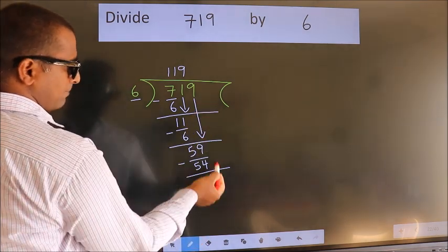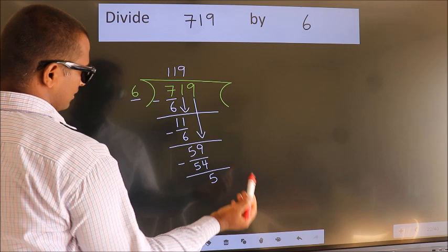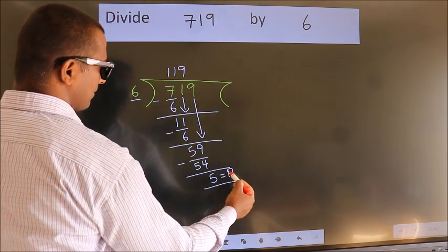No more numbers to bring down. So we stop here. This is our remainder. This is our quotient.